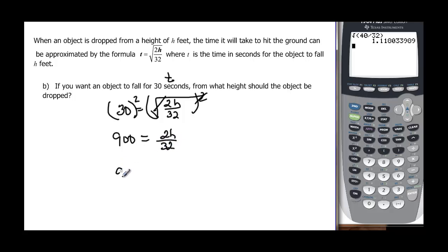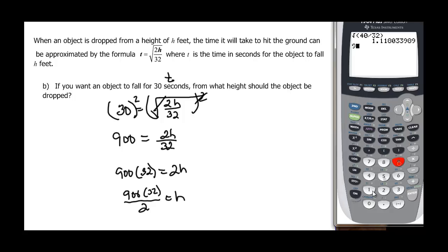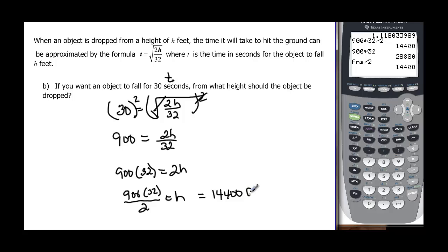And now we just have to say 900 times our 32 to clear the fraction, equal to 2h. 900 times that 32, whatever that is, divided by 2 will be our h when we divide the 2 off of both sides. So we can go to our calculator and say 900 times 32 and divided by 2. The height should be 14,400 feet if it's going to take 30 seconds to drop, that's the height we need to be at.